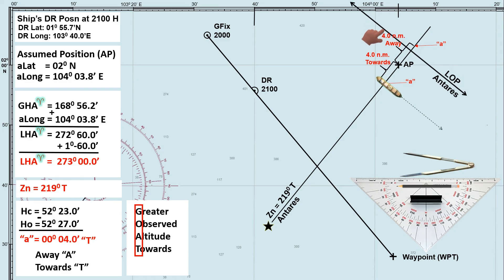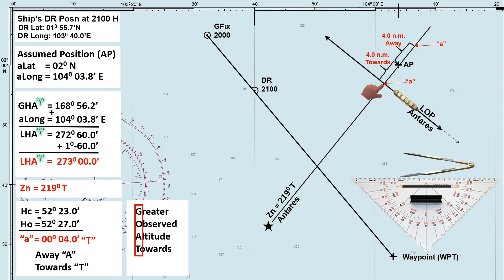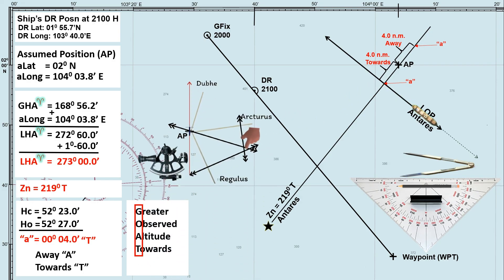If you have taken the sextant altitude of two or more celestial bodies simultaneously, the intersection of two or more LOPs is the ship's fixed position at the time of observation. That's all for now — I hope you found this video helpful. See you next time, thank you for watching.